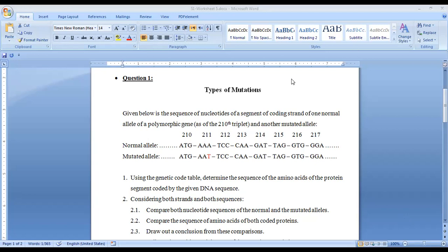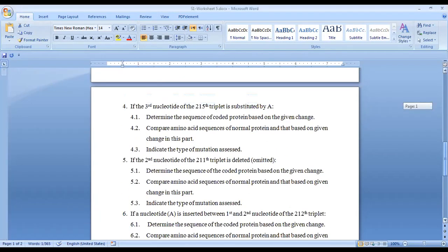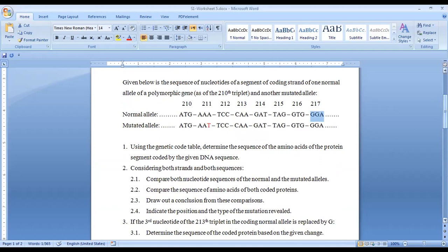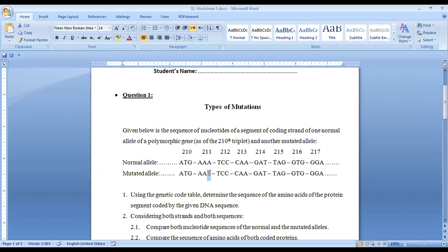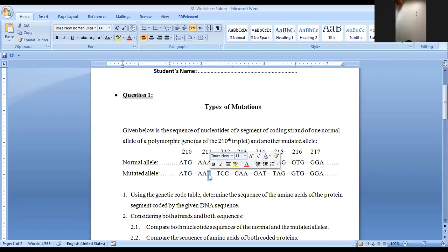Okay, so let's start with the sequence of the DNA. Using the genetic code table, determine the sequence of the amino acids of protein. As Ran said, the same sequence instead of T is substituted by U, and we can use the genetic code table to answer the question. Number two: considering both strands and both sequences, compare both the nucleotide sequence of the normal and the mutated. Both nucleotides have the same sequence, unless for the third nucleotide in the 211th codon, where it's A in the normal and T in the abnormal. Compare the amino acid sequence. Any mutation in the DNA sequence can cause a mutation in the amino acid sequence. Indicate the position and type of mutation. The position is the third nucleotide of the 211th codon. It's point mutation by substitution, where A nucleotide is substituted by T.